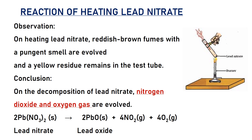Activity: heating lead nitrate. Observation: on heating lead nitrate, reddish-brown fumes with a pungent smell are evolved and a yellow residue remains in the test tube. Conclusion: on decomposition of lead nitrate, nitrogen dioxide and oxygen gas are evolved. Equation: 2Pb(NO₃)₂ → 2PbO + 4NO₂ + O₂. This is an example of a decomposition reaction.